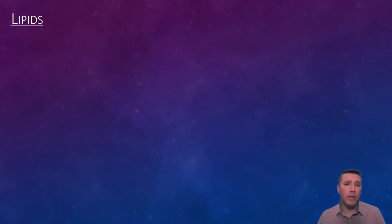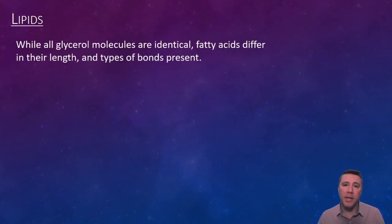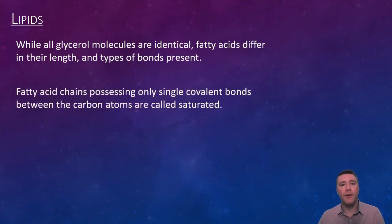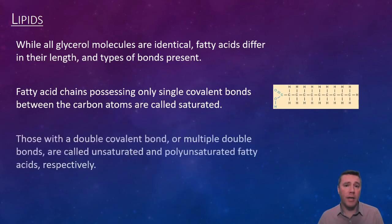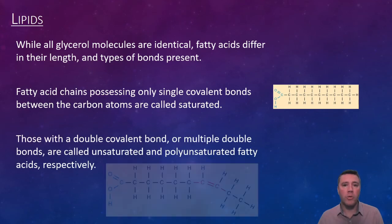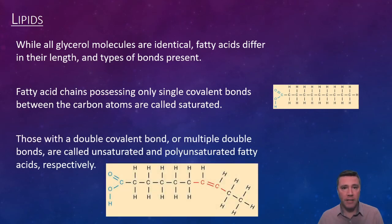All glycerol molecules are identical, but the same cannot be said of fatty acids. Fatty acids differ in their length based on the number of carbon atoms present, as well as the types of covalent bonds found in the chain. Fatty acid chains that are comprised solely of single covalent bonds are called saturated. On the other hand, the presence of a double covalent bond results in an unsaturated fat. Polyunsaturated fatty acids contain more than one double covalent bond.